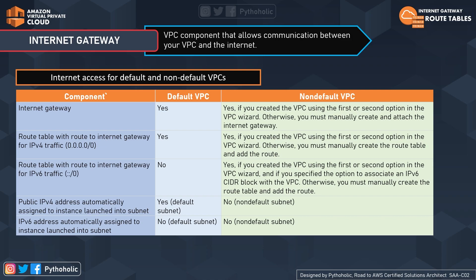For IPv6, there is no default route to the internet gateway for either default or non-default VPCs unless you explicitly assign IPv6 — mostly this applies to IPv4. Regarding public IPv4 addresses, they are automatically assigned to instances launched into a default subnet, which is why you were able to access the internet without manually creating an internet gateway. For non-default subnets, you must specify this explicitly; it is not assigned automatically. For IPv6, it is no for both default and non-default as expected.